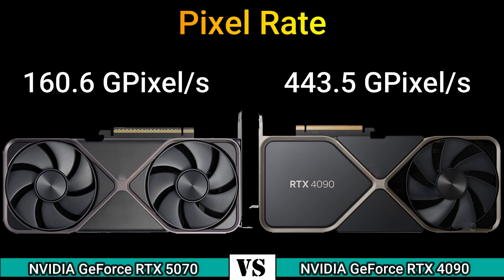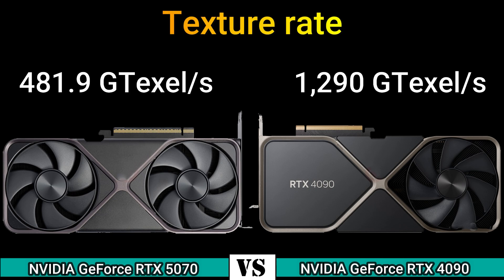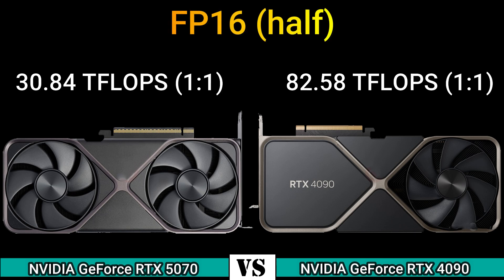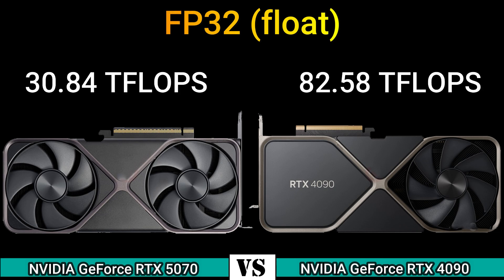Pixel rate: 160.6 GP/s and 443.5 GP/s. Texture rate: 481.9 GT/s and 1290 GT/s. FP16 half: 30.84 TFLOPS (1:1) and 82.58 TFLOPS (1:1). FP32 float: 30.84 TFLOPS and 82.58 TFLOPS.